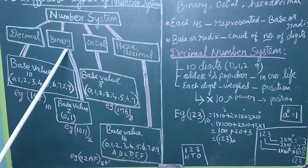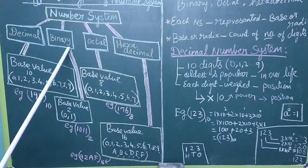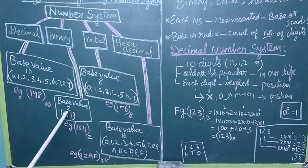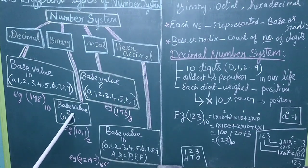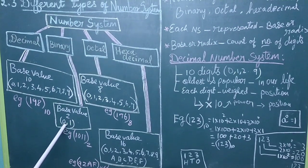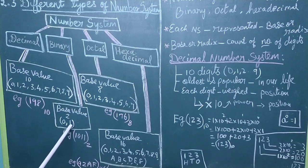Next, binary number system. The binary number system's base value is 2, because only 2 numbers are used: 0 and 1.